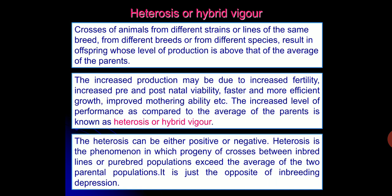For example, suppose one male has a capacity to produce 5 liters of milk whereas the female produces 6 liters. The average production will be around 5.5 liters. However, when we mate these two individuals, the resulting progeny will have production of more than 5.5 liters — let us say 6 liters. This 0.5 liter over and above the average of the parents is called Heterosis or Hybrid Vigor.